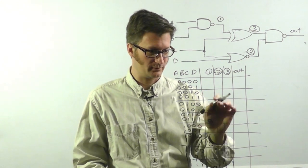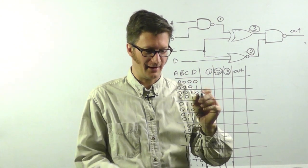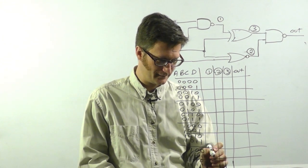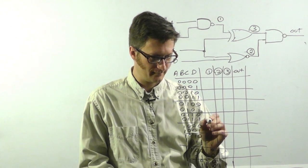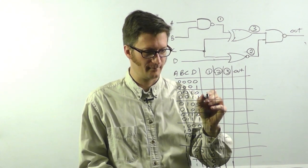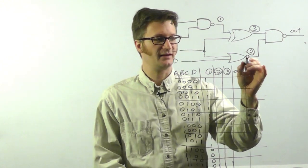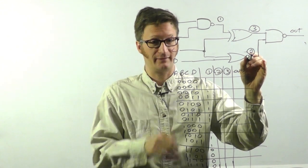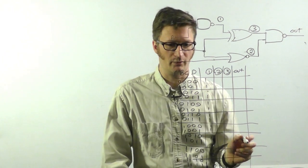Oops. I'm looking at C and D. If A and B are high, then the output will be low. All right. At point two, we have C nor D. So if C and D are low, then the output will be high.